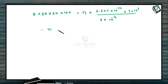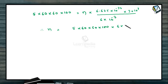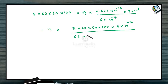Therefore N = (5 × 60 × 60 × 100 × 6 × 10⁻⁷) divided by (6.625 × 10⁻³⁴ × 3 × 10⁸). So let us work out the nearest number possible.